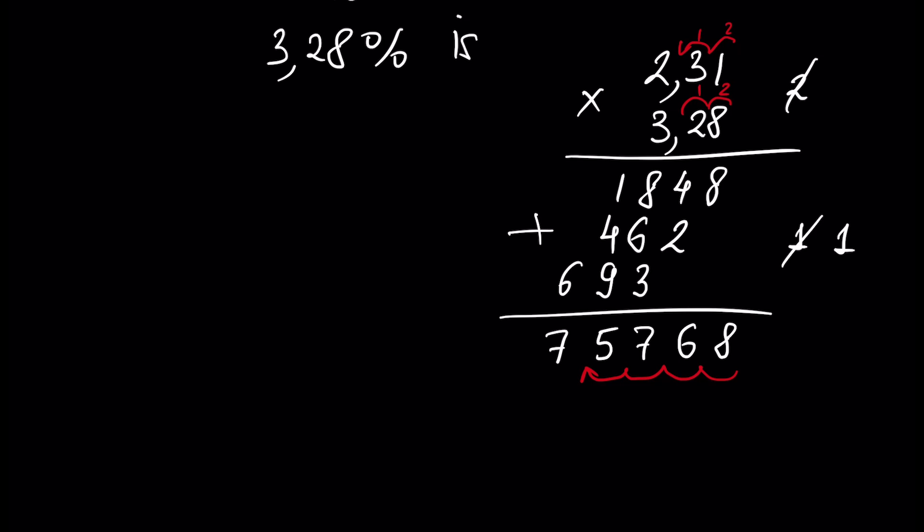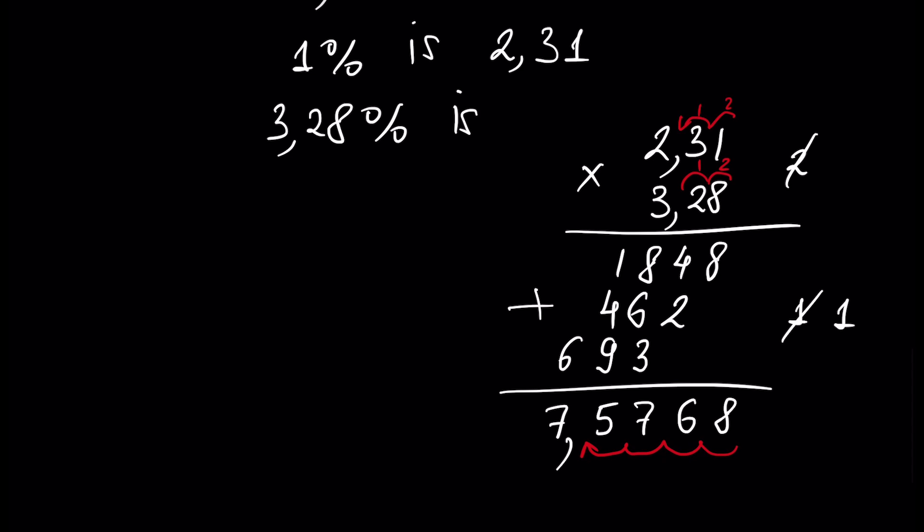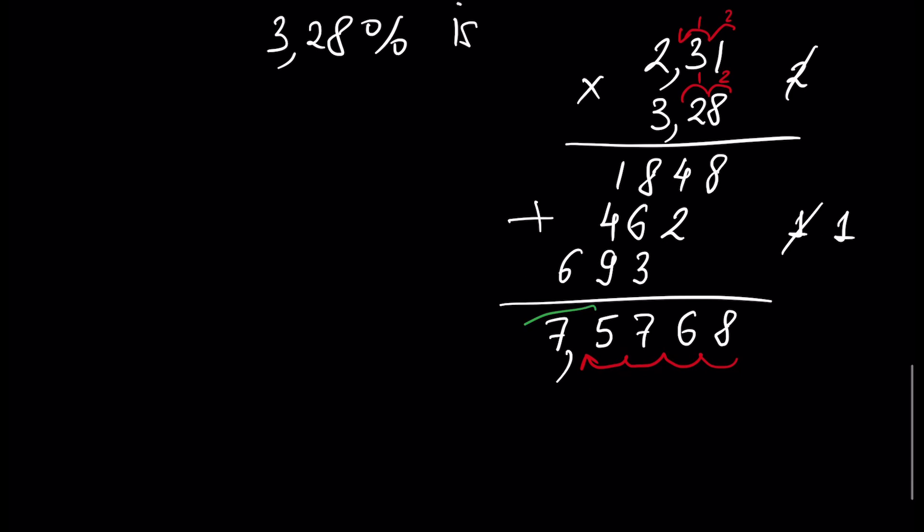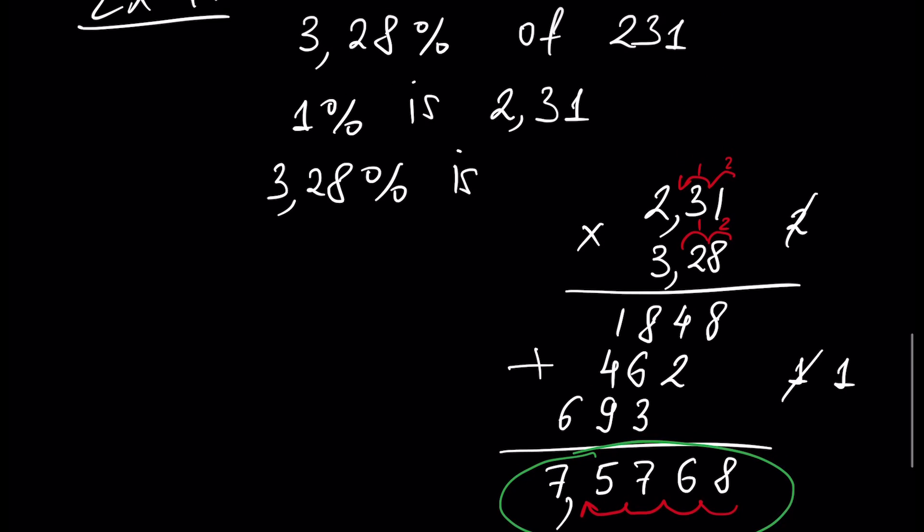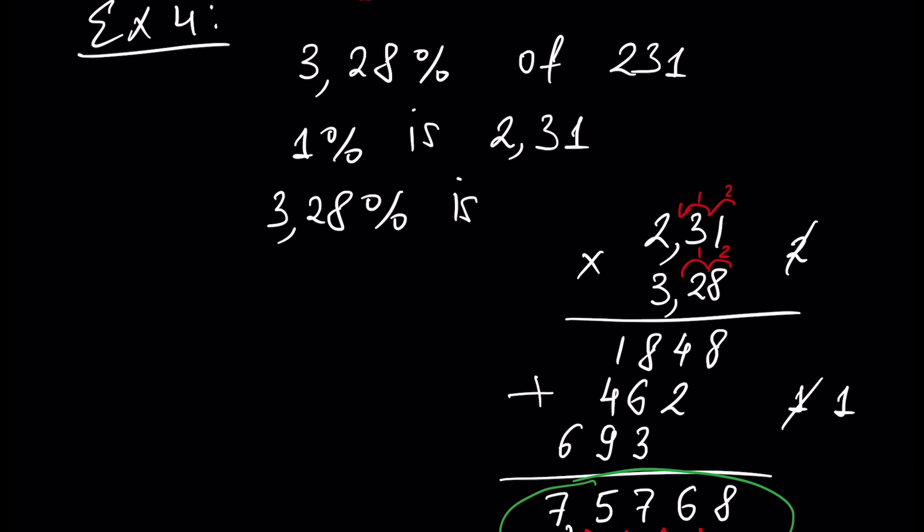The floating point will be here. So this number, 7.5768, is 3.28% of 231.